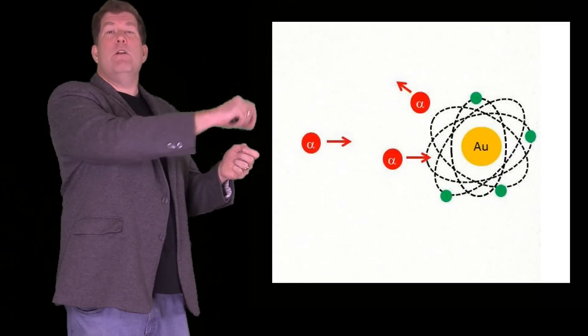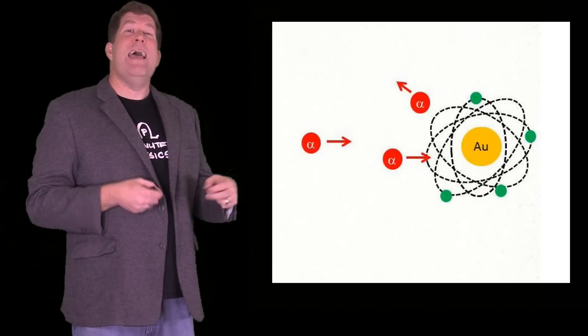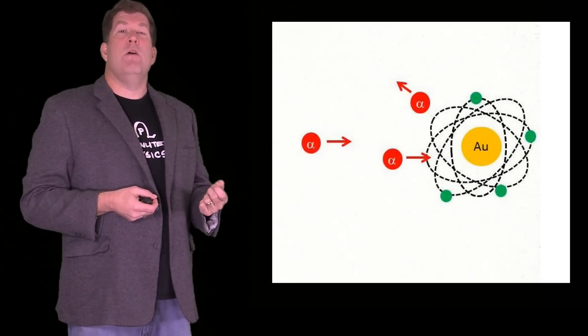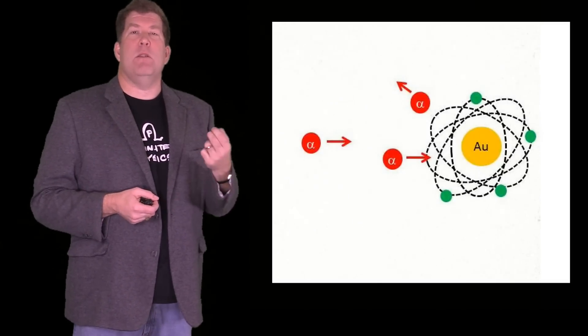That cartoon atom you learn in grade school, with electrons orbiting the nucleus like a tiny little solar system? That idea is Rutherford's. Rutherford's atom is great, except for one little problem, which is it can't possibly work.